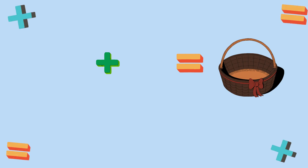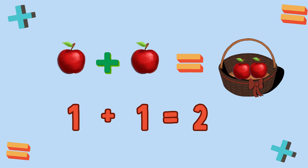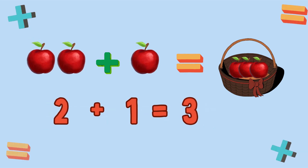How many apples are here in total? 1 apple plus 1 apple — there are 2 apples in the basket. 1 plus 1 is equal to 2. How many apples are here in total? 2 apples plus 1 apple — there are 3 apples in the basket. 2 plus 1 is equal to 3.